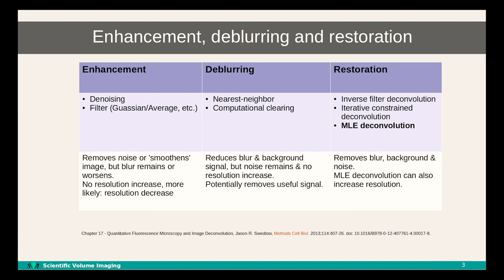There are various methods available to improve microscopy images, and these different methods can be segmented into basically three different approaches: image enhancement, de-blurring, and image restoration. Most deconvolution approaches fall in this last section — the image restoration part.